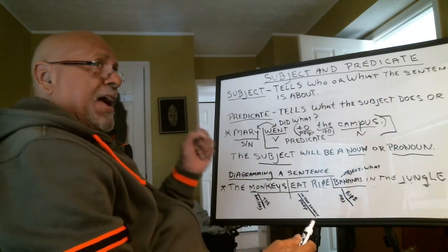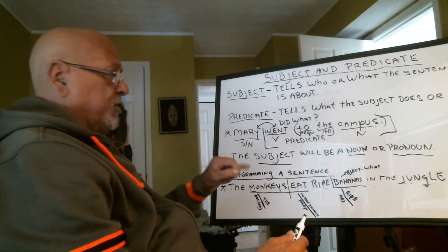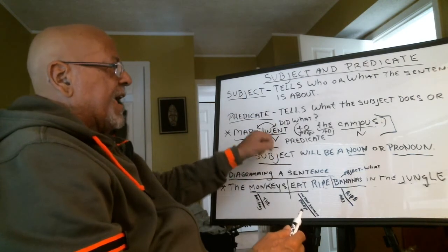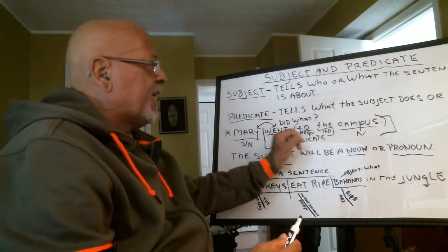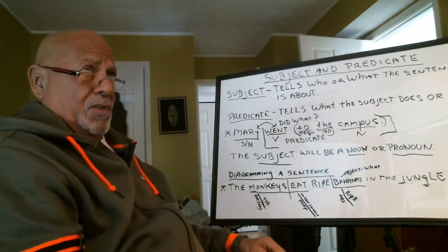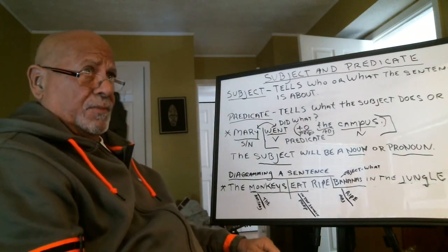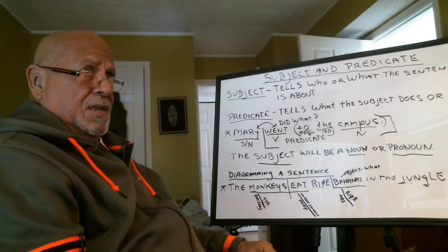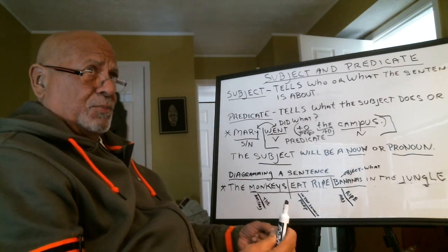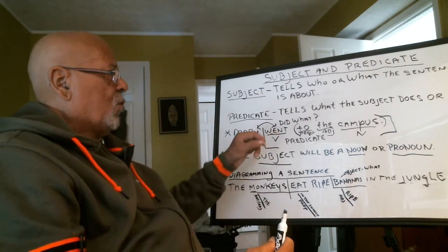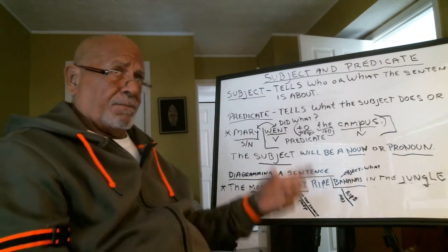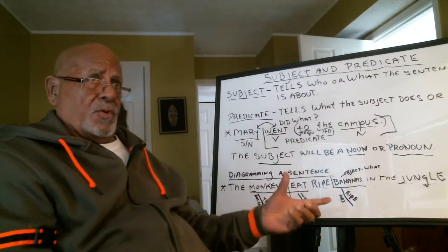The predicate is the verb and everything that comes after the verb until the end of the sentence. So 'Mary' is the subject, and the predicate is 'went to the campus.' This is a simple sentence.